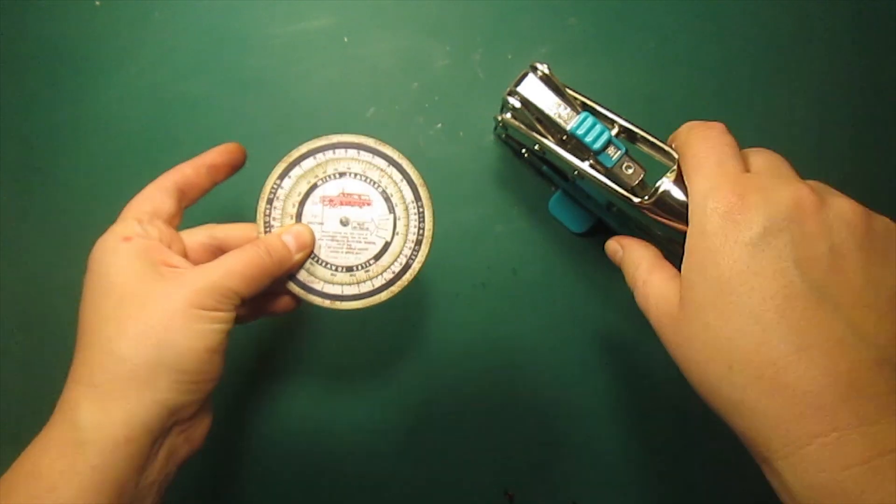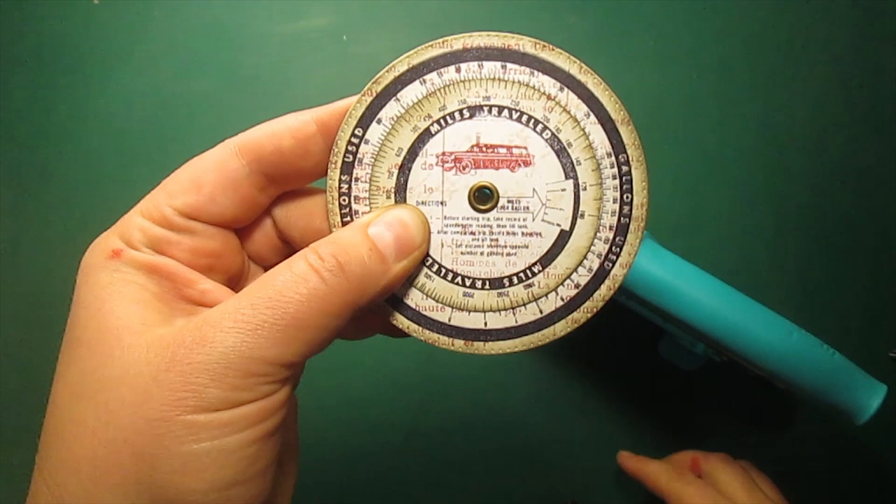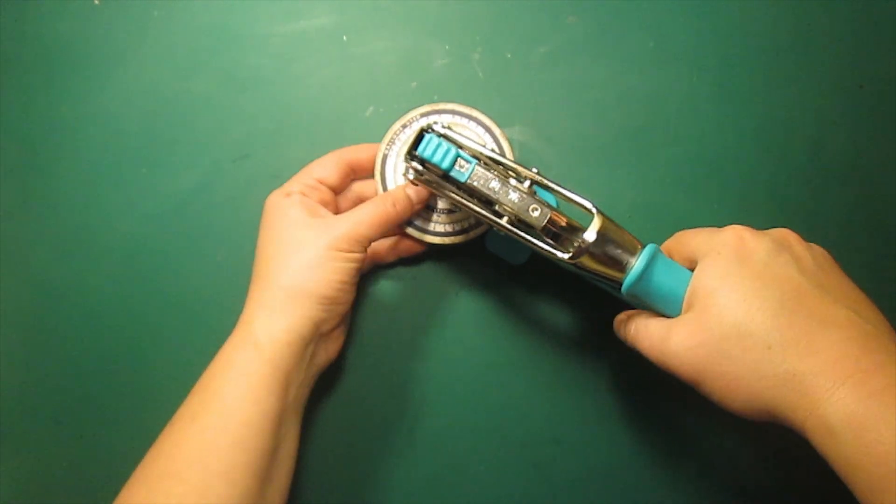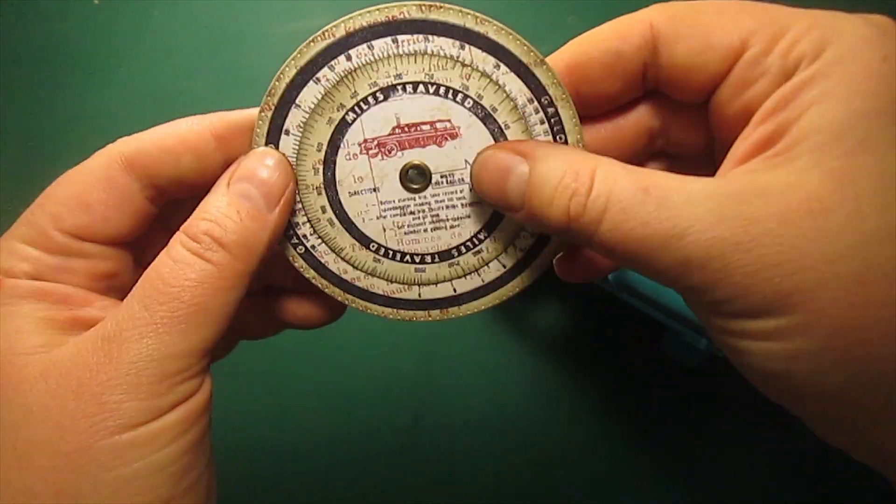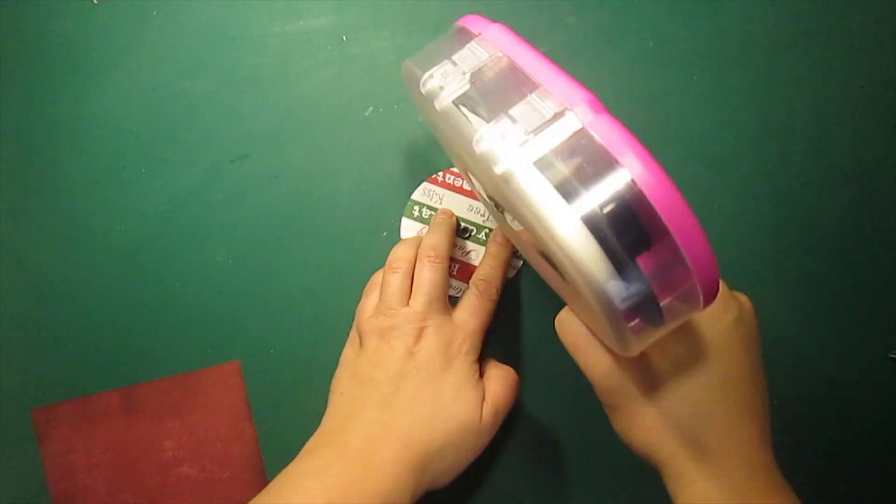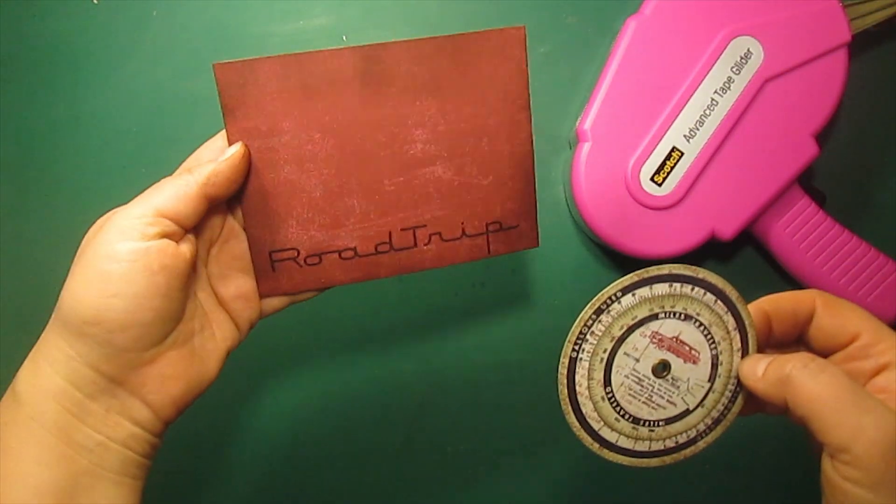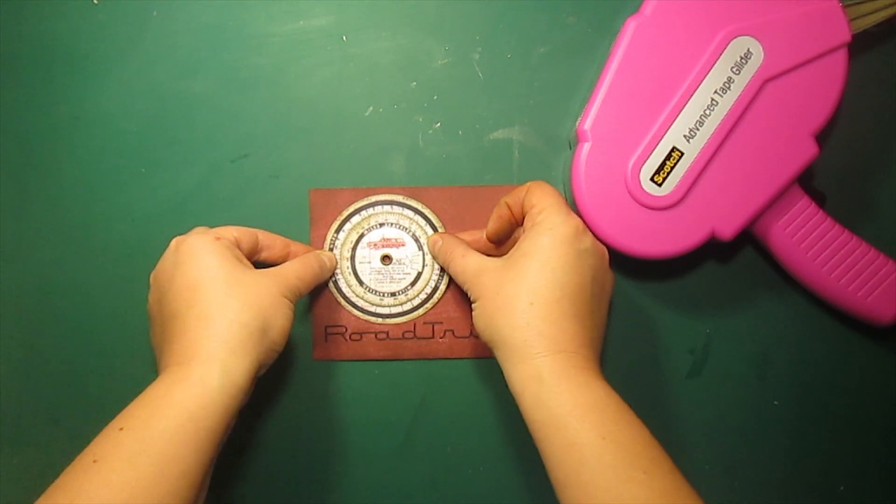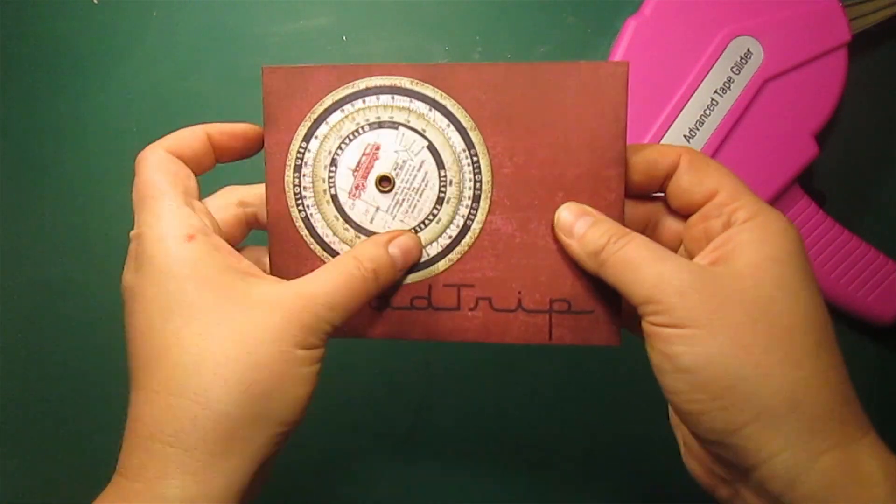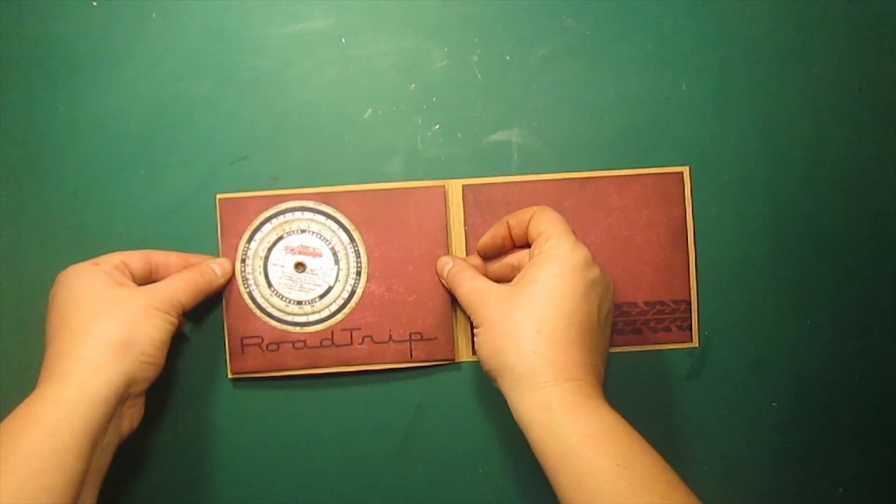I have distressed the edges with a frayed burlap ink and now I'm aligning the two circles and punching a hole in the middle. Then I will set up an eyelet. This will create a fun interactive element, a real vintage fuel calculator. Now I'm sticking it to the patterned paper panel that I have pre-inked and pre-stamped. This whole piece will go on the inside of the card.